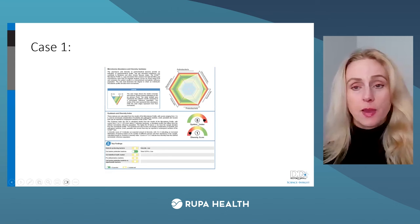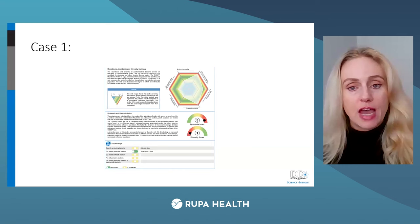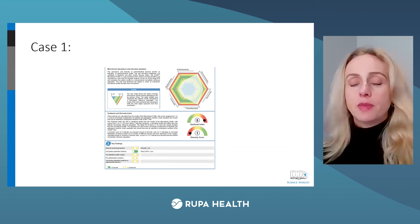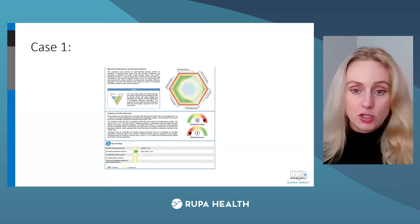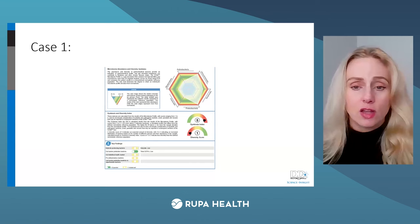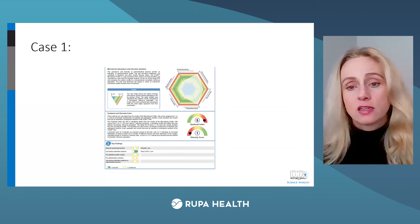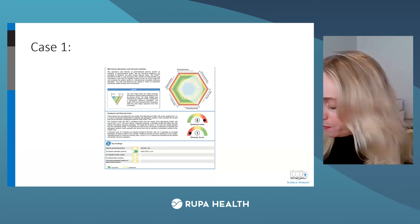For this patient, the dysbiosis index score is 5 — this is a young patient. In the back of my mind I'm thinking about risk for chronic disease: IBS, IBD, metabolic conditions. We want to help this patient get back to baseline. For diversity, the score is 1 — a very low score. This is a standard American diet-induced dysbiotic gut with low diversity.